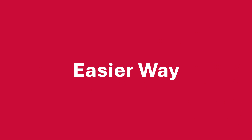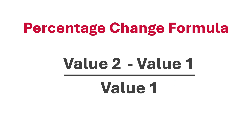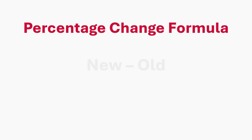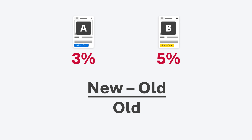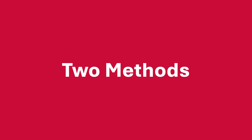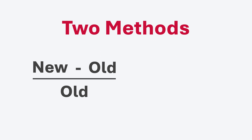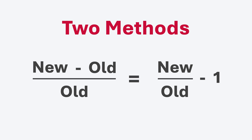There's an easier way to remember this calculation. The typical nerdy math version is value 2 minus value 1 over value 1. The way I tend to remember it is: new minus old over old. We can also simplify that math to new over old minus 1. A lot of people prefer this second formula — you'll hear people say they only use this one.